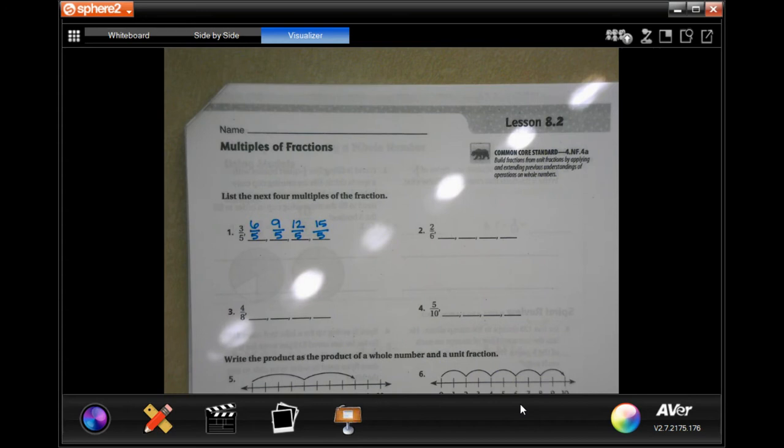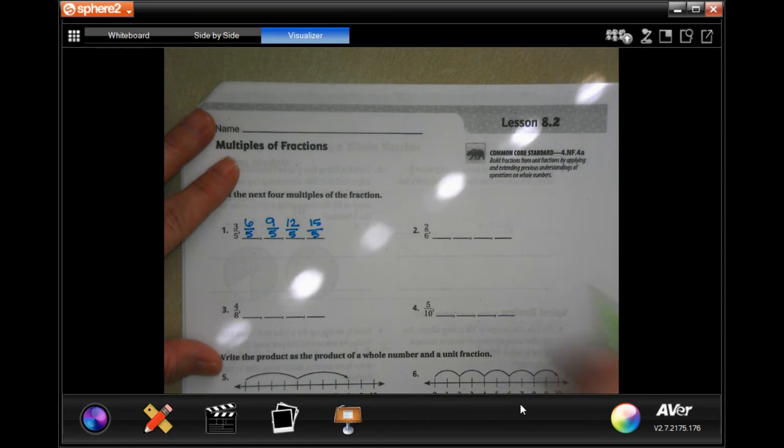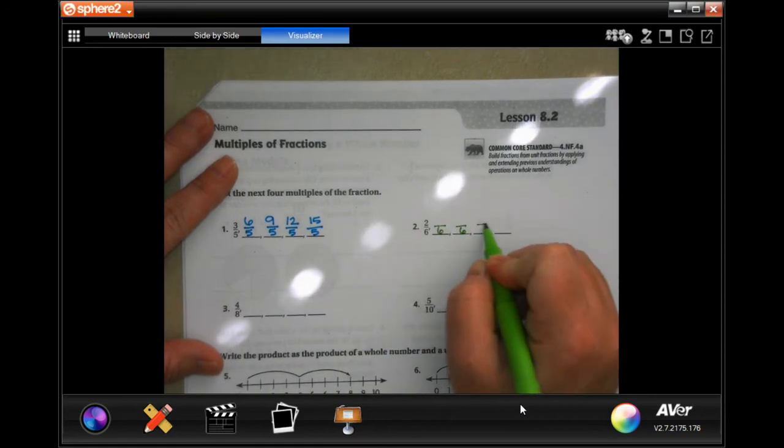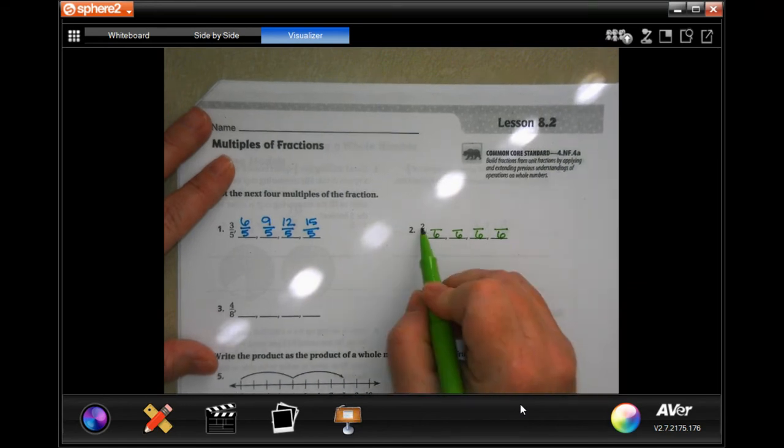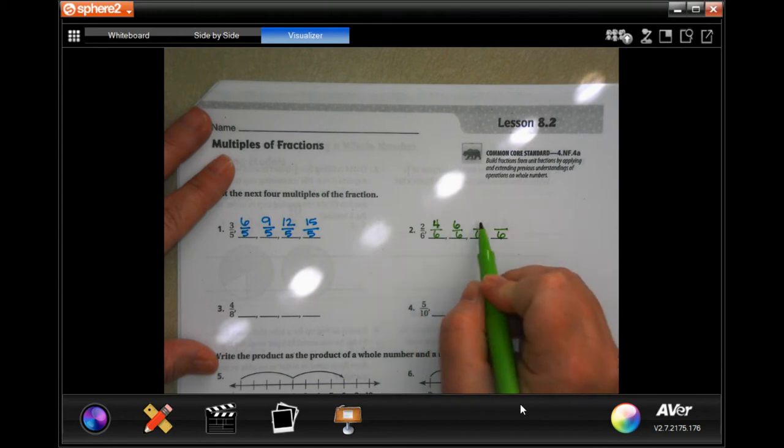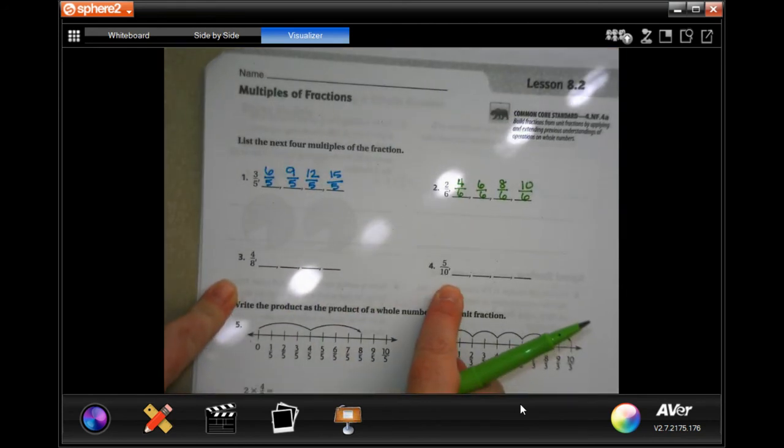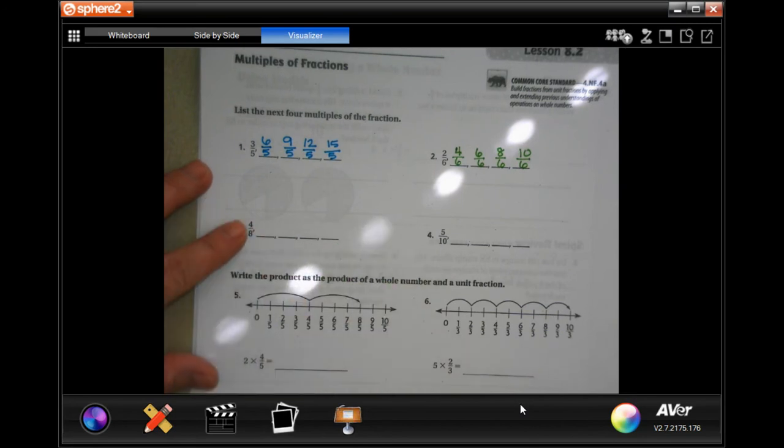Okay, let's do that again. We are going to keep the denominator all the way across. Then two, well two plus two is four, plus two more is six, plus two more is eight, plus two more is ten. Done. Okay, you guys do three and four. Keep your denominator, keep adding that top number.